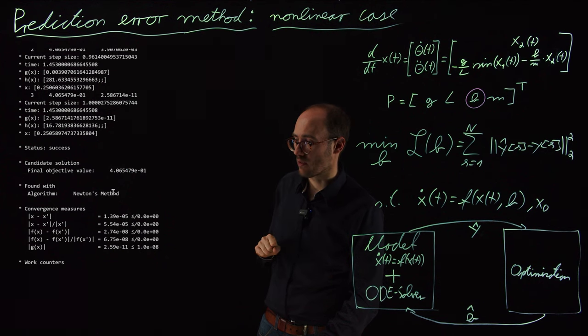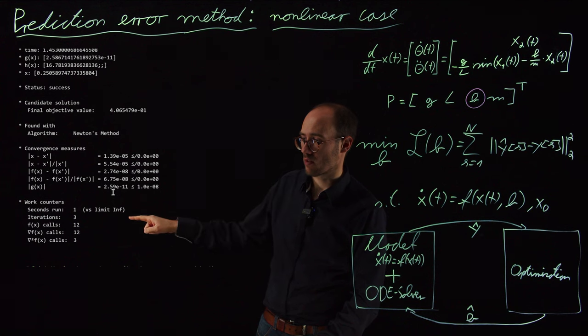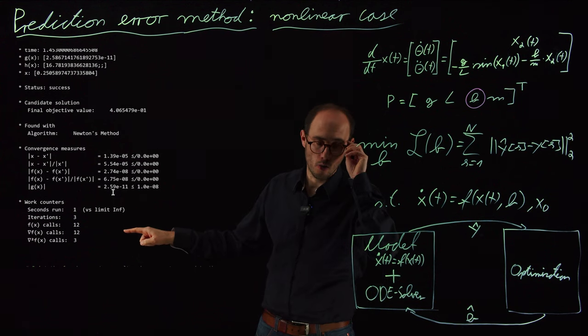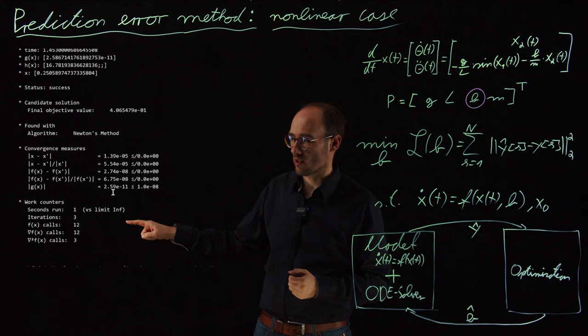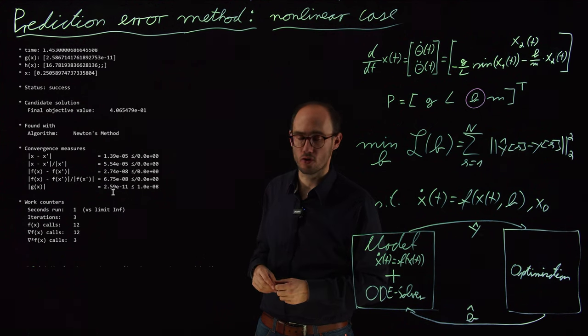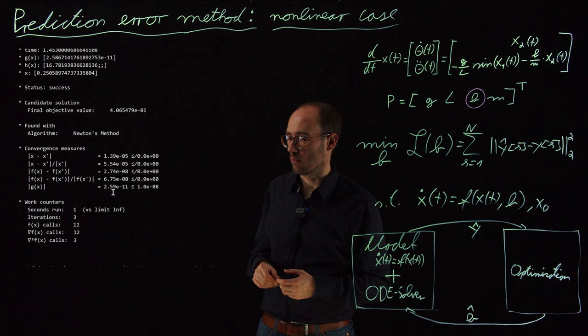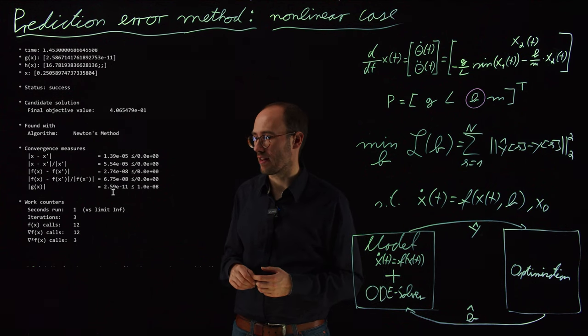The objective seems to be quite minor. And we can also see interestingly, that the solver only needed three iterations and very minimal function calls in order to solve this optimization problem. And we will see just in a second why that is the case.